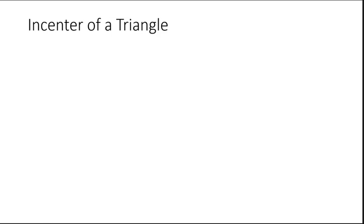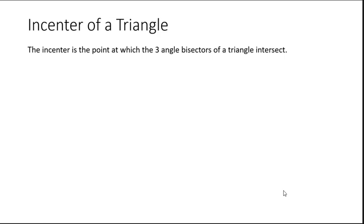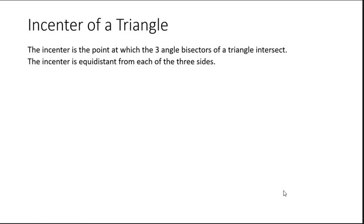Now we're going to expand on that concept of the angle bisector. What we have is what we call the incenter of a triangle. The incenter is the point at which the three angle bisectors of a triangle intersect. Because a triangle has three sides and three angles, if you bisect each of those angles, they will intersect at a particular point. The incenter is also equidistant from each of the three sides.